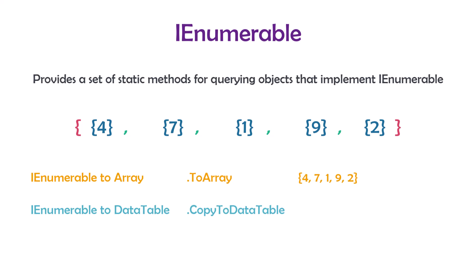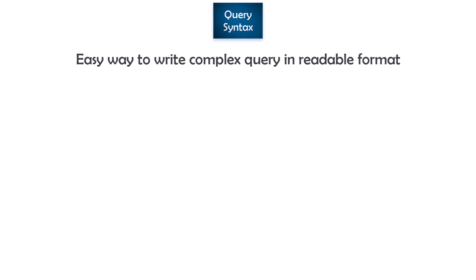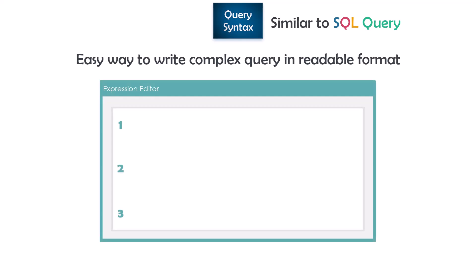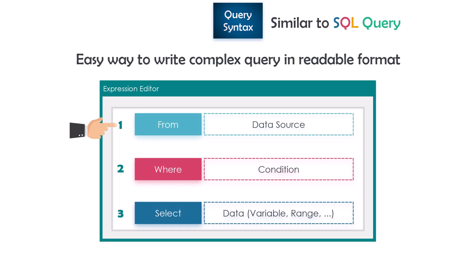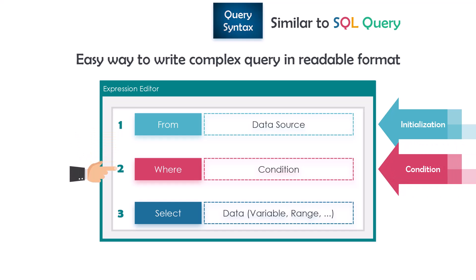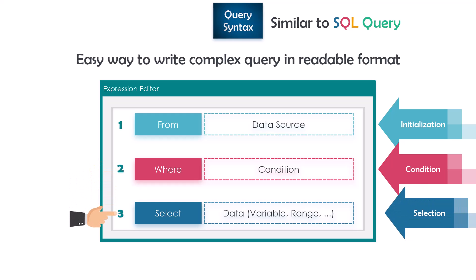Now let's start learning the different ways to write a LINQ query. The first one is query syntax — an easy way to write a complex LINQ query in a readable format. The syntax here is very similar to SQL query. The query consists of: the from operator, which represents initialization and defines the data source; the where operator, which represents the condition to filter data or sort it; and the select operator at the end, to select the data we need.